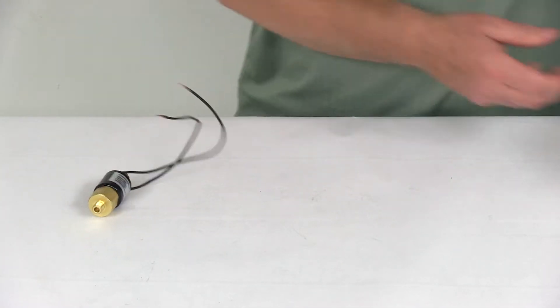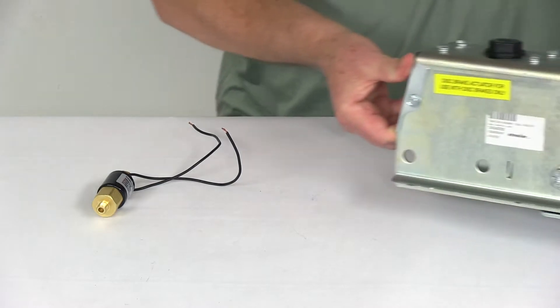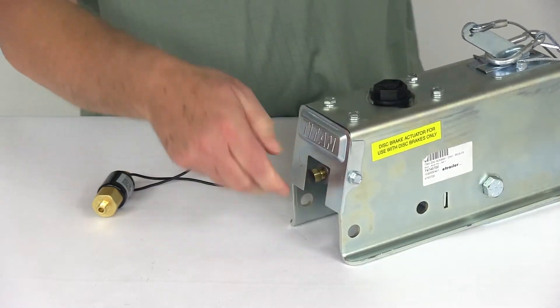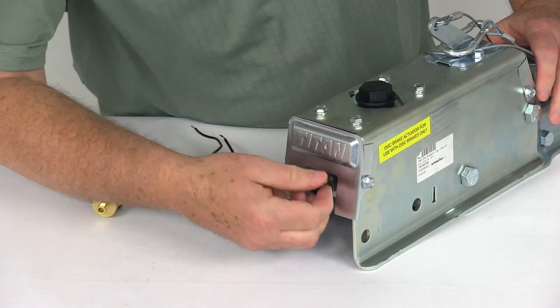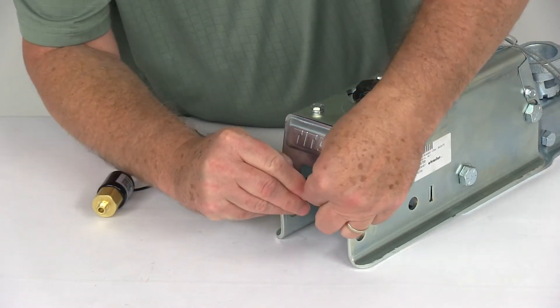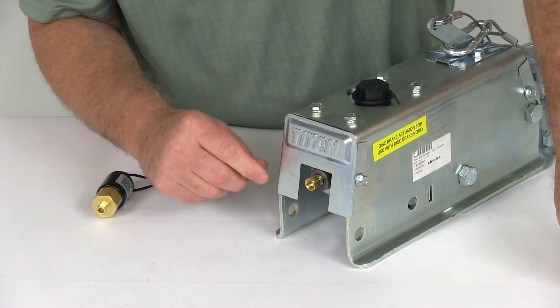What I want to show you here is we have a Model 60 actuator. I'll show you the back of it and that's how it will come when it doesn't have the solenoid valve. This is where your brake line will connect, go ahead and pull that plug out.